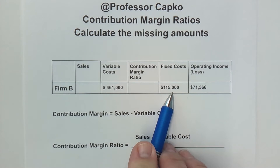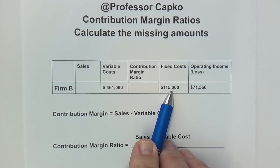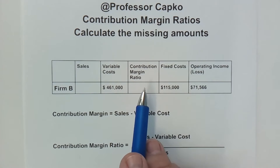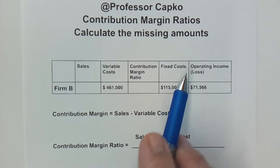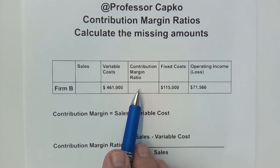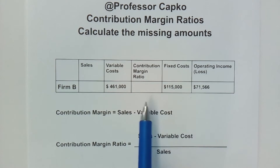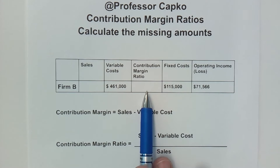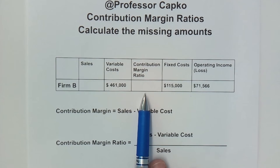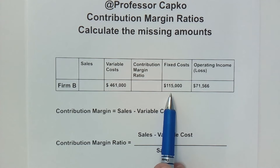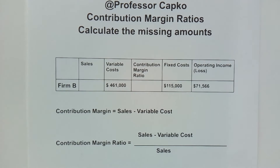We do know the fixed costs. Fixed costs don't change no matter what sales do — this would be an example of maybe rent or something along those lines that doesn't change even if nothing is sold or even if sales are doubled; it stays the same. And contribution margin ratio shows us how much of your sales goes toward the bottom line, the operating income. It's a percentage, and if we multiply that by sales it tells us how much our contribution margin is. Subtract out fixed costs and that gives us operating income.